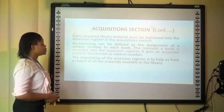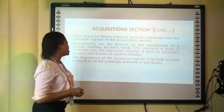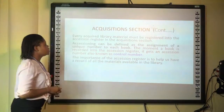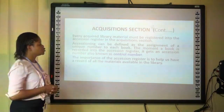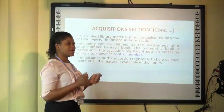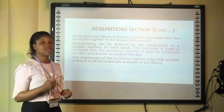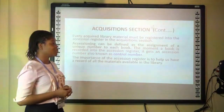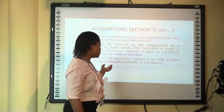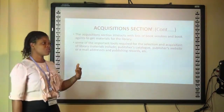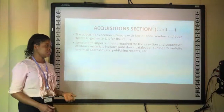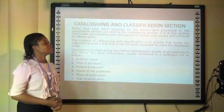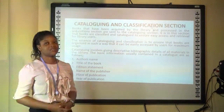Every acquired library material must be registered in the accession register in the acquisition section. The accession process involves giving each library material a unique number. The importance of registering library materials is to help the library keep a record of everything that comes into the library.